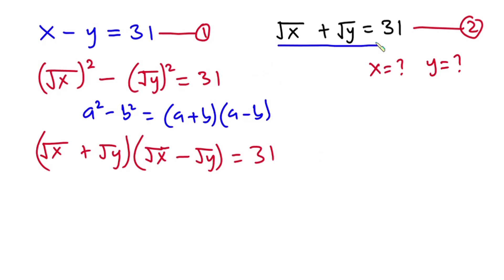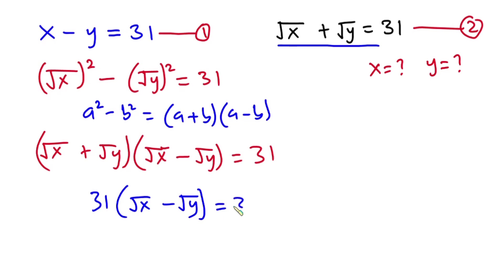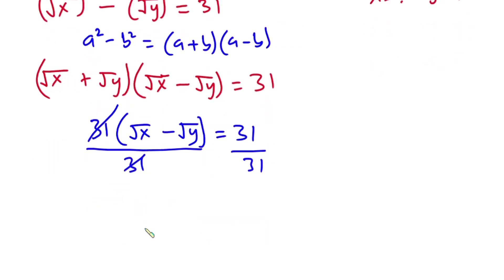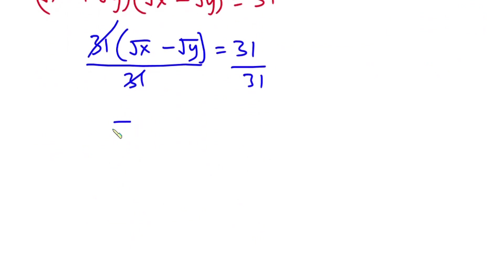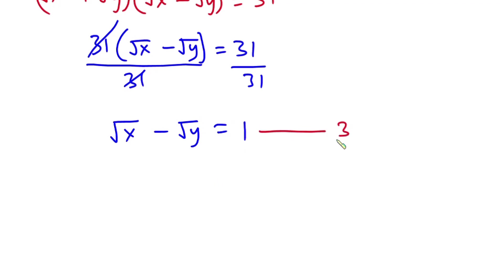From equation 2, we know square root of x plus square root of y is 31, so I'm going to replace this whole thing with 31. So we have 31 times square root of x minus square root of y is equal to 31. Let's divide each side of the equation by 31, so that cancels. Now we have square root of x minus square root of y is equal to 1. I'll call this equation 3.